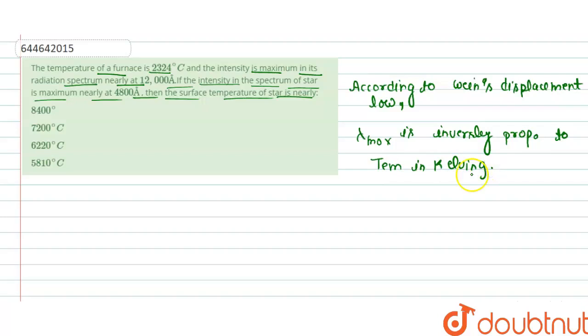That means lambda 1 upon lambda 2, that is equals to T2 by T1.